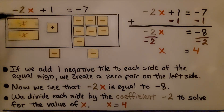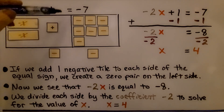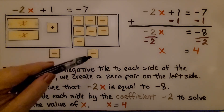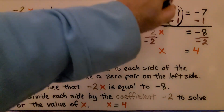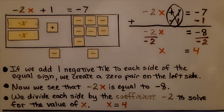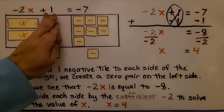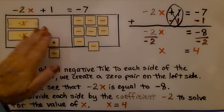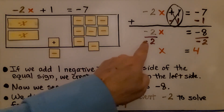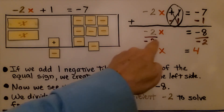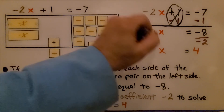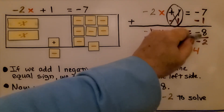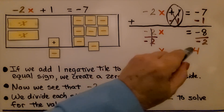Here we have negative 2x plus 1 is equal to negative 7. If we add one negative tile to each side of the equal sign, we can create a zero pair on the left side and eliminate the plus 1. Now we can see that negative 2x is equal to negative 8. This created a zero pair, so it's gone. We divide both sides by the coefficient negative 2. On this side, the numerator and denominator are the same, so we make a 1 — we have 1x, but we don't have to write the 1. On this side, we have negative 8 divided by negative 2 — they're both negative, so our quotient is positive. We have x is equal to 4.